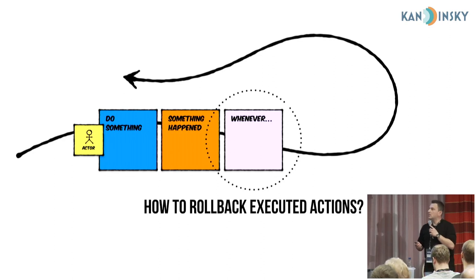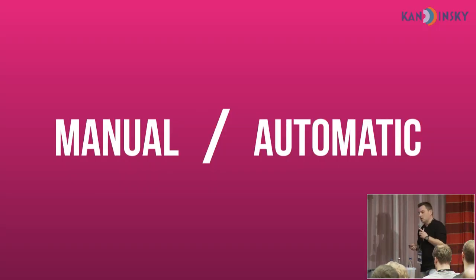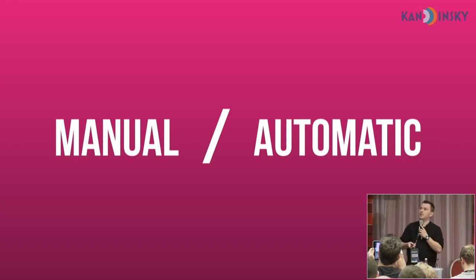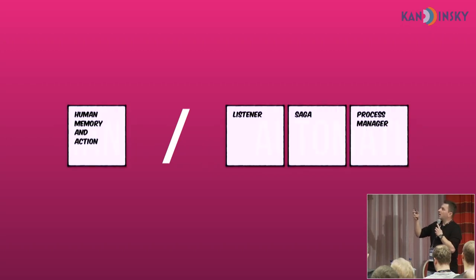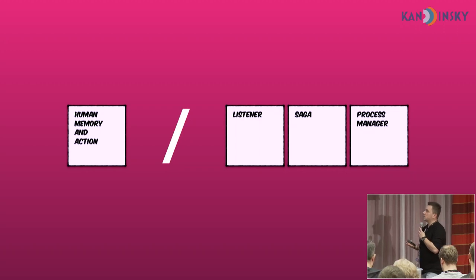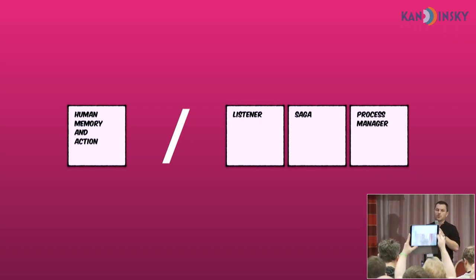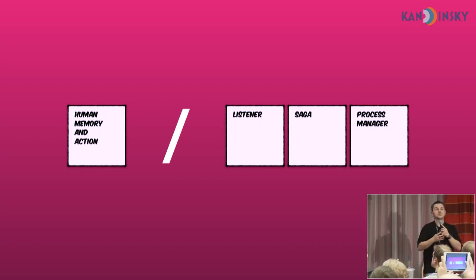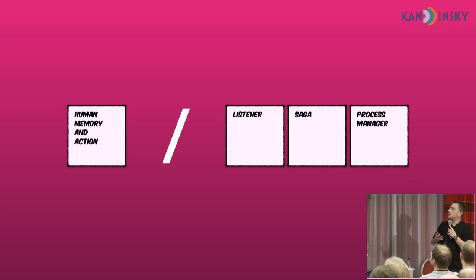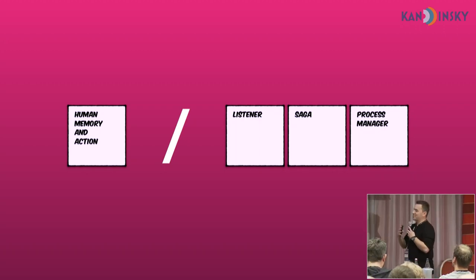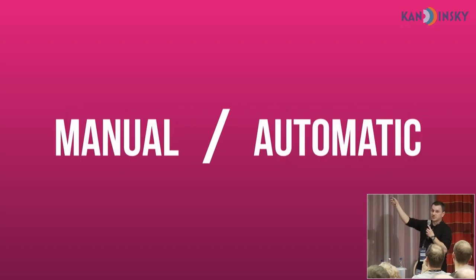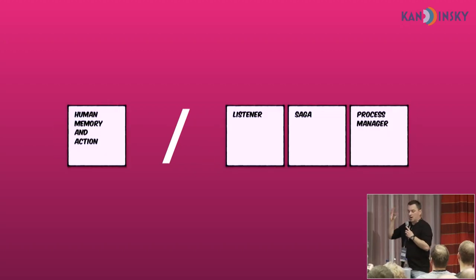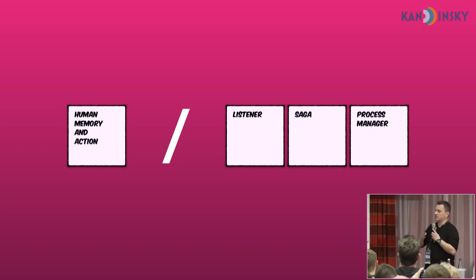The question is when and how we can roll back, when and how we can push the process forward, and who is responsible for triggering this logic. This logic may be automatic or manual — it depends on our domain, our project, and the level of automation we want to achieve. For manual process pushing, we can use just humans — someone must remember that if something happened, some actions must be taken. For automatic reactions, we've got choices: we can write a listener, or use more complicated patterns like Saga and Process Manager.